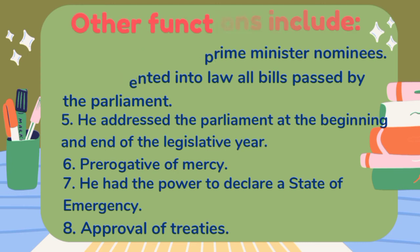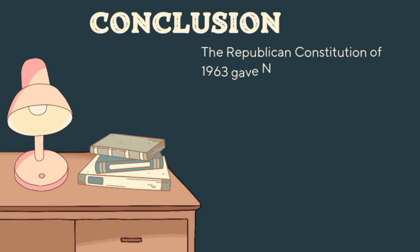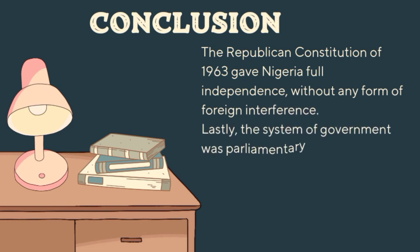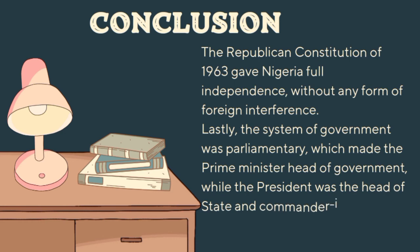He approved treaties. In conclusion, the Republican Constitution of 1963 gave Nigeria full independence without any form of foreign interference. The system of government was parliamentary, which made the prime minister head of government while the president was head of state and commander-in-chief of the armed forces. This is all I have for you today; till we meet in our next class, goodbye.